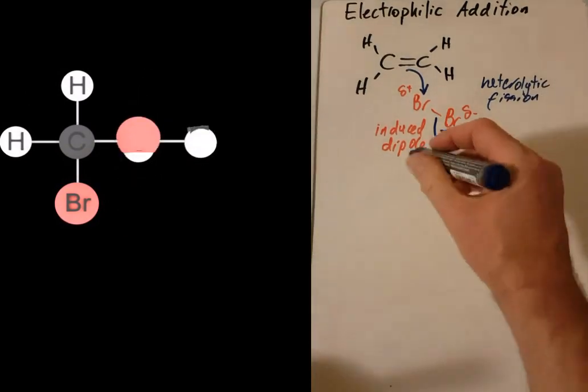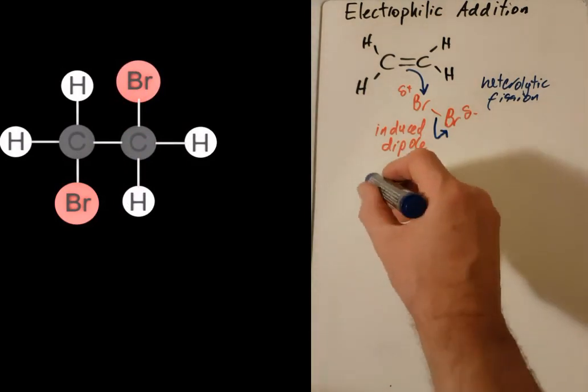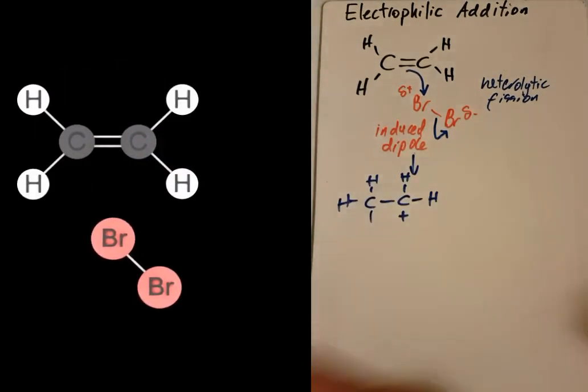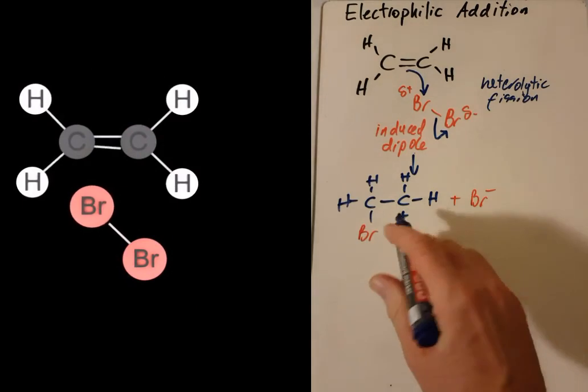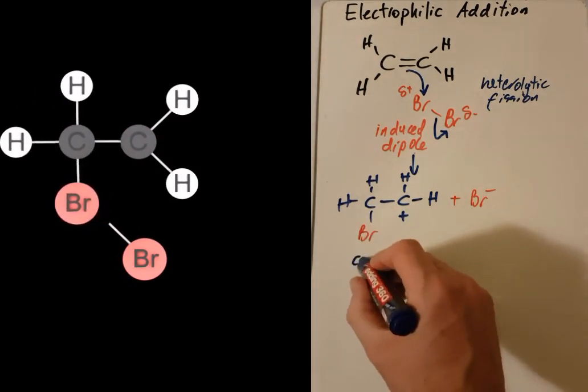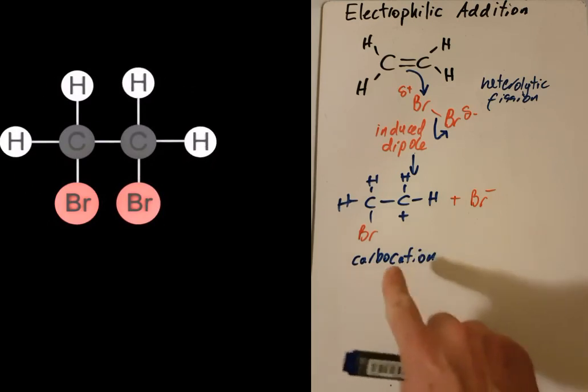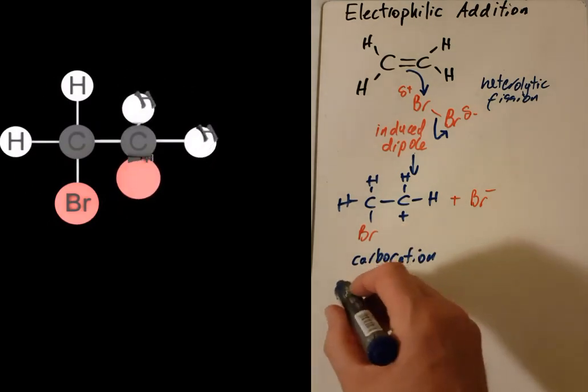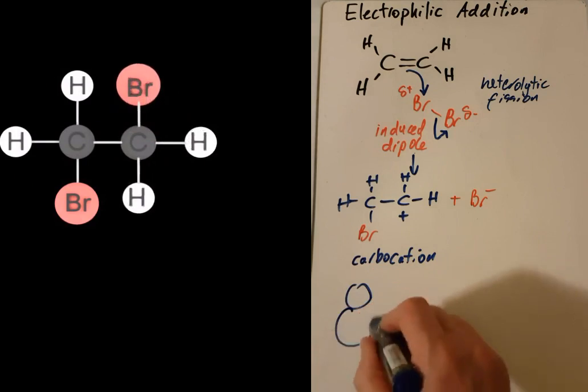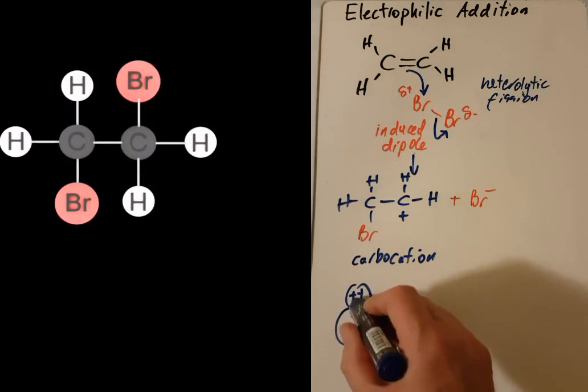So what have we got now? This is known as a carbocation. Cations are positive. You can think of plussy cat. That's how I remember that cations are positive.